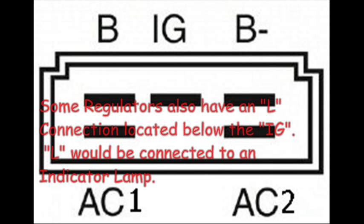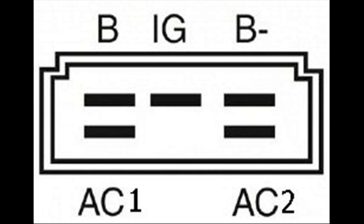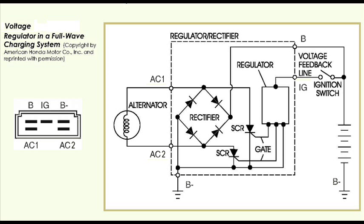The pinouts on the regulator itself amount to a B plus, B minus ignition and the AC1 and AC2, which connect across the coil in the generator or the lawnmower itself. Here's a schematic diagram from Honda showing the connector, the alternator,